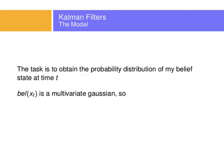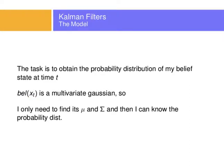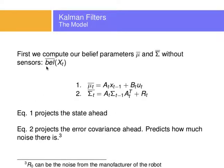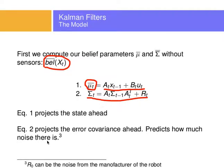The task is to obtain the probability distribution of my belief state at time t — I need mu_t and sigma_t. It's a multivariate Gaussian, so the parameters are the mean and the covariance — these are matrices. First I compute the belief without the sensors: my mean state will be the motion equations plus the action applied, and I compute my covariance — how much error was introduced by moving. The first equation projects the state ahead; the second equation projects the error covariance ahead and predicts how much noise there is. If you don't know the initial R, the manufacturer might give you an initial value.